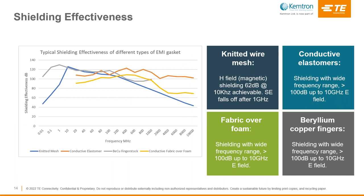This slide shows typical shielding effectiveness for different types of EMI gaskets. There is a variation in performance between materials and a variation depending on frequency. Knitted wire mesh achieves H-field shielding down at 10 kilohertz; however, performance starts to fall off above 1 gigahertz. Conductive elastomers offer over 100 dB shielding performance over a wide frequency range up to 10 gigahertz. Fabric over foam offers shielding over a wide frequency range, although it has low performance in the low-frequency magnetic field. Beryllium copper offers high performance over a wide frequency range.